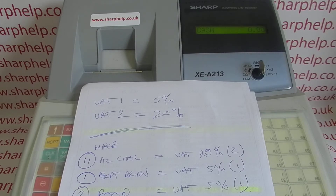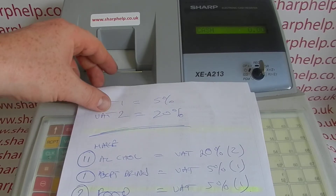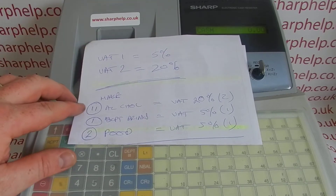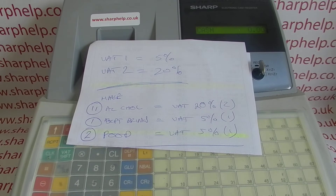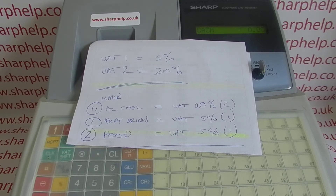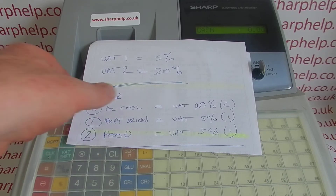You don't have to follow the preset department VAT rates, but I'm going to in this video just to make it a bit quicker. I've got three departments to set up: alcohol, which I'm making department 11; soft drinks; and food. I've picked those three because they're topical with the hospitality VAT rate cut, and also because I'll program them slightly differently so I can cover everything shown in the manual. Page 8 to 17, 18, and 19 is where I'm getting this information from.